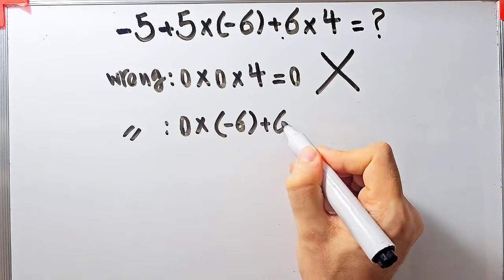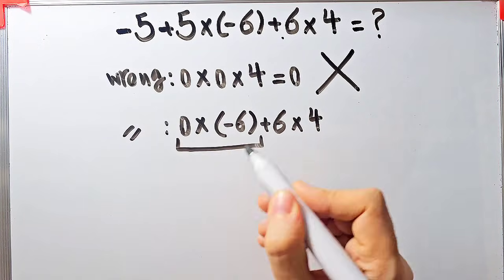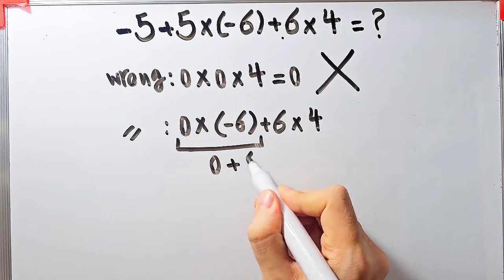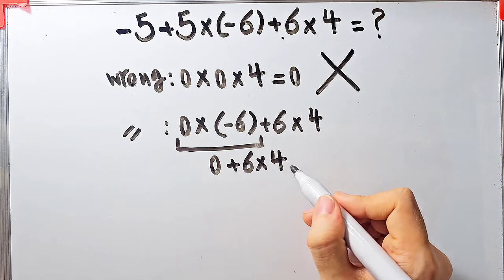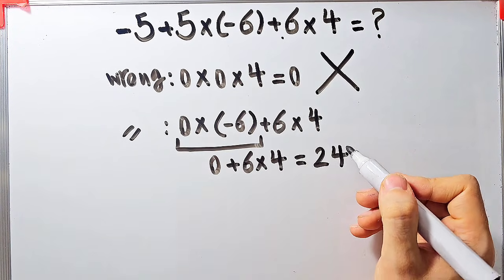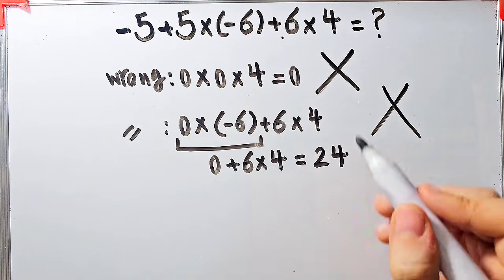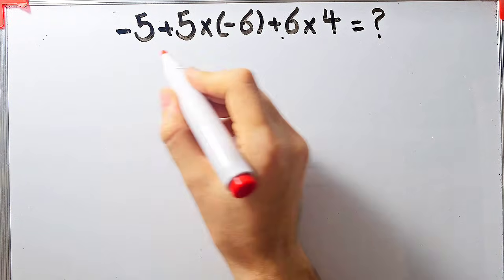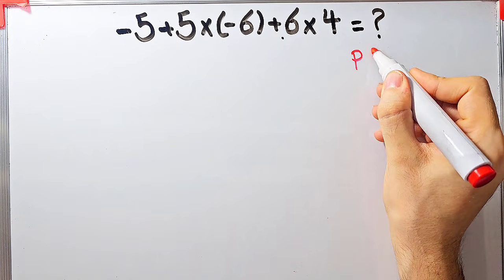Again, some people solve this question like this: negative 5 plus 5 equals 0, 0 times negative 6 plus 6 then times 4. 0 times negative 6 equals 0, 0 plus 6 then times 4, 0 plus 6 equals 6, and 6 times 4 equals 24. They say the final answer equals 24, but this answer is definitely wrong. To solve this question we need to follow the order of operations, which is PEMDAS.